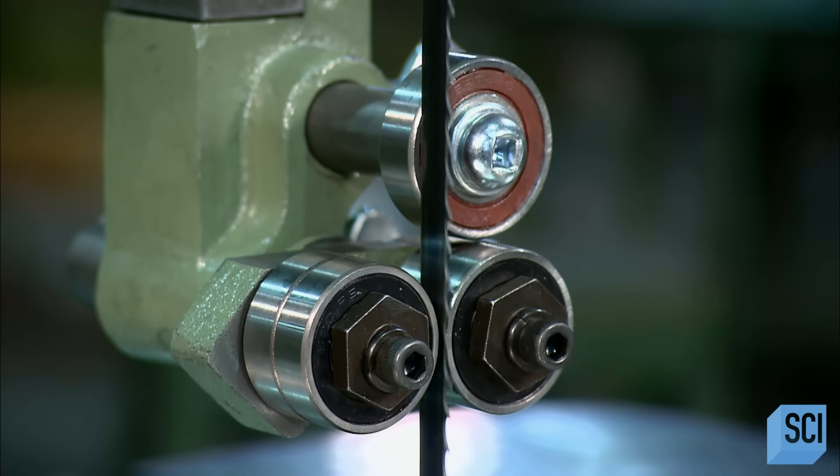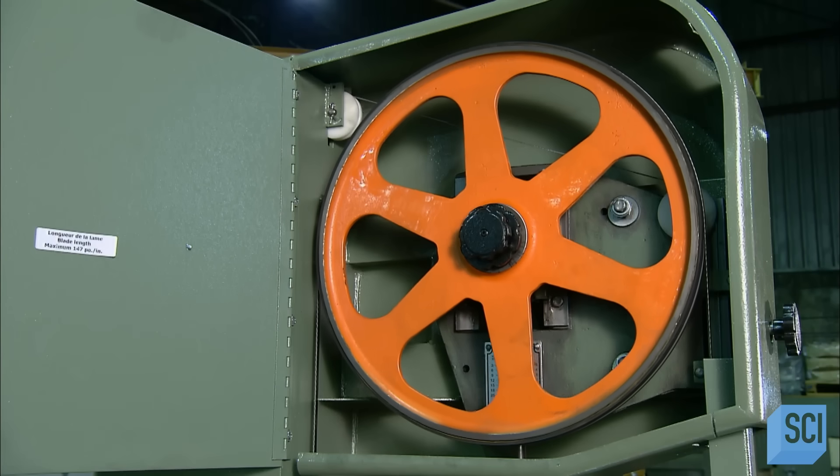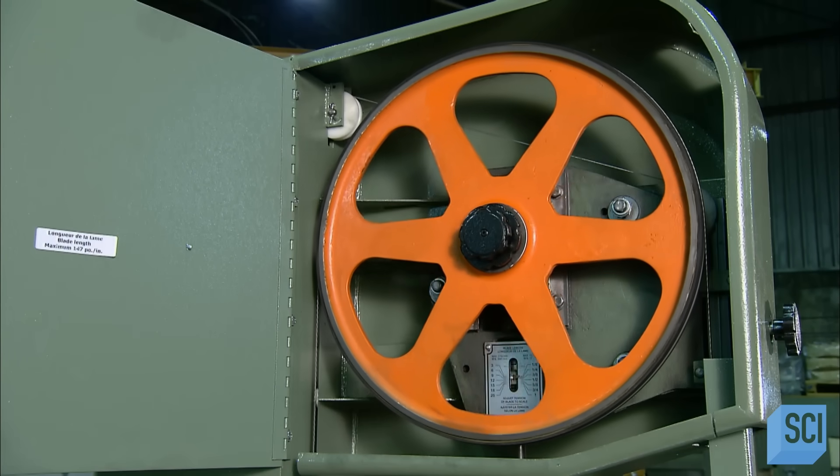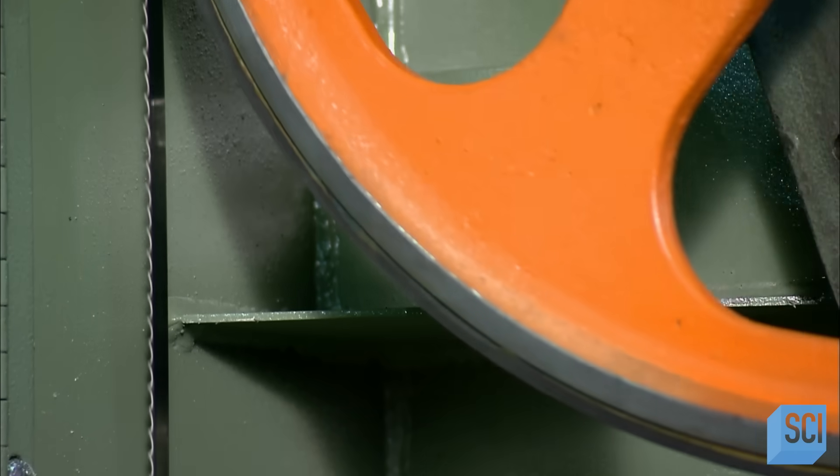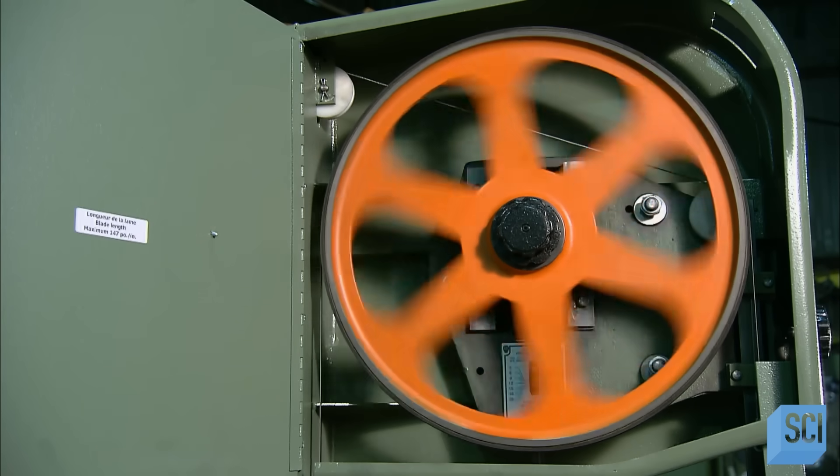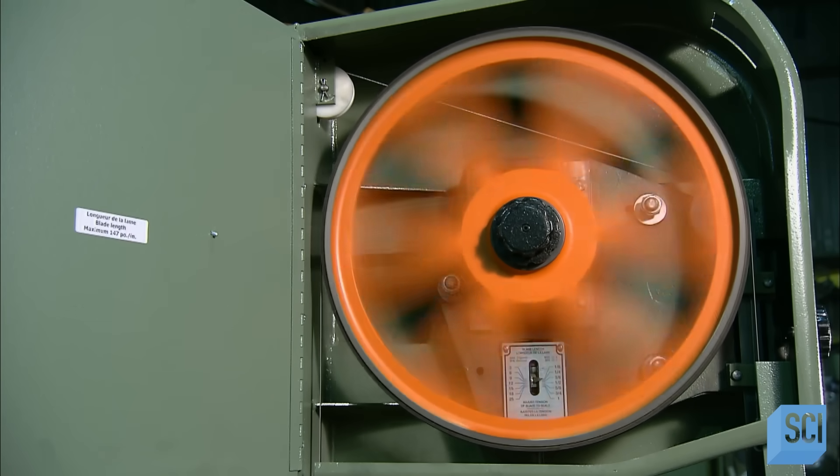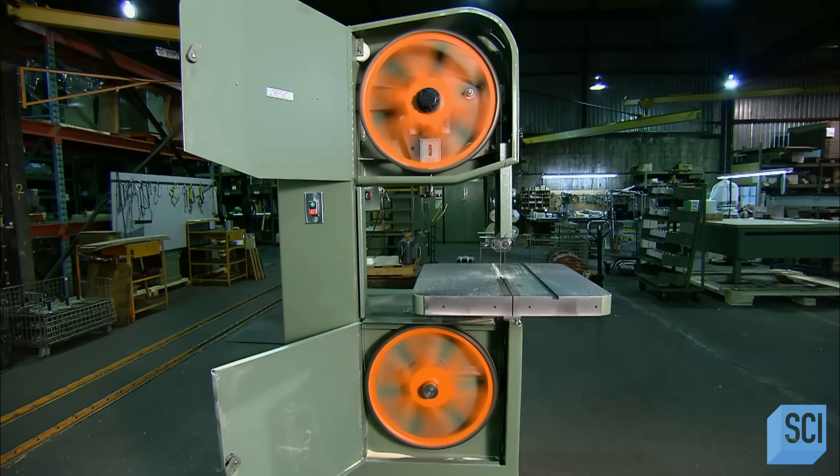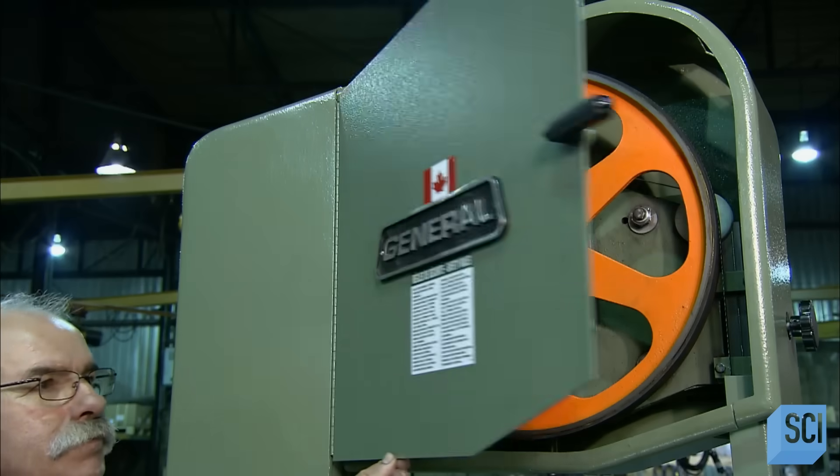Without these, the blade would wobble or drift offline due to the force of cutting through the wood or other hard material. Now, just a final check to ensure everything runs smoothly and make absolutely sure this bandsaw is up to speed when it comes to cutting construction materials.